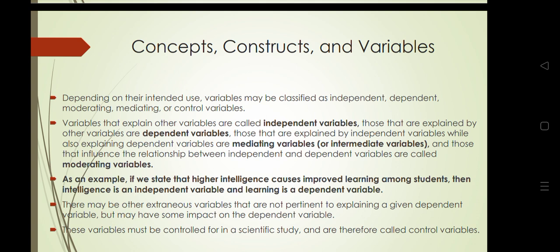Variables that influence the relationship between independent and dependent variables are called moderating variables. The two main categories are independent and dependent variables. As an example, if higher intelligence causes improved learning among students, then intelligence is the independent variable and learning is the dependent variable — because learning is affected by intelligence.